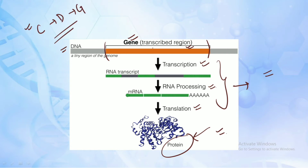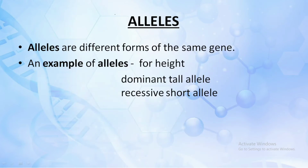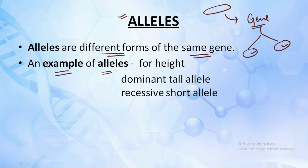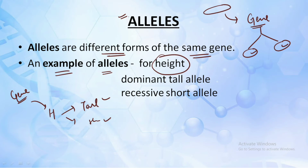Now let's understand what alleles are. A gene is a particular part of DNA encoding for a product — that product represents some character, and that character can have different forms. Alleles are nothing but the different forms of the same gene. When a gene has various forms, those forms are the alleles of that gene. For example, height is encoded by some gene and the height of a person could either be tall or short — these are the different forms, so tall and short are alleles for the height gene.